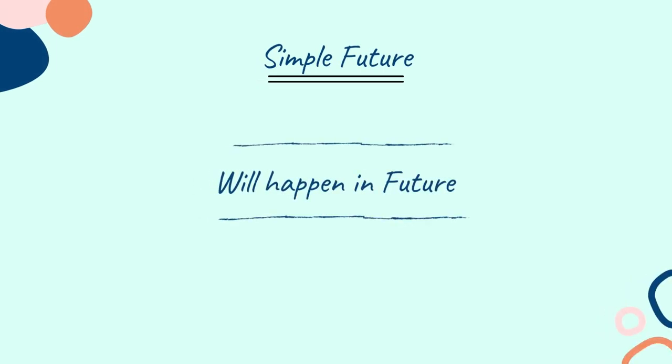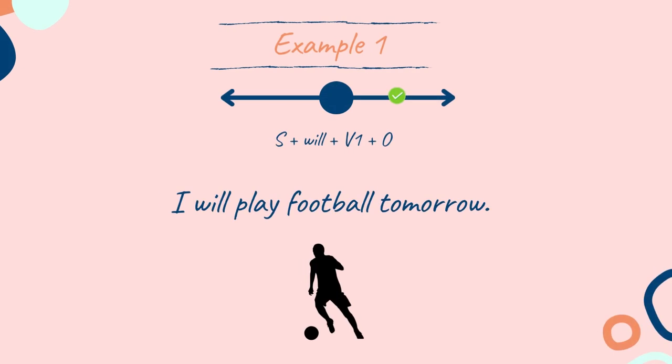The main use of simple future tense is to show actions that will happen in the future. For example: I will play football tomorrow. My activity of playing football will occur tomorrow, so we have used simple future tense here. In the timeline, it is shown on the right side with a green tick. Looking at the structure: I is the subject, will is the helping verb, play is the verb's first form, and football is the object. Time is mentioned as tomorrow.